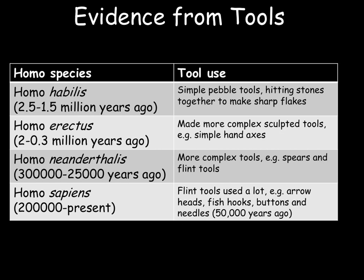Moving forward, we have Homo neanderthalensis, who is very closely related to Homo sapiens, and it is believed that we may have interbred with them when we came into contact in Northern Europe. Around this time we start to find more complex tools, for example spears and flint tools, and we can see that tools are now being combined with wooden handles in order to extend their reach. Finally, with Homo sapiens we start to find flint tools being used to make more complex arrowheads, fish hooks, buttons and needles. These arrowheads start to appear in the Mesolithic age between 6,000 and 10,000 years ago, before even more advanced tools appear in the Neolithic age, which is 4,000 to 6,000 years ago.